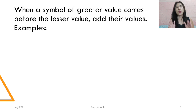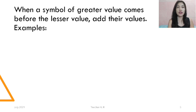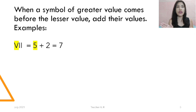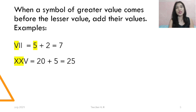We have to remember: when the symbol of greater value comes before the lesser value, we add their values. For example, VI — V is greater than I, so it's 5 plus 2, which equals 7. We also have XXV: XX is 20 and V is 5, so 20 plus 5 equals 25.